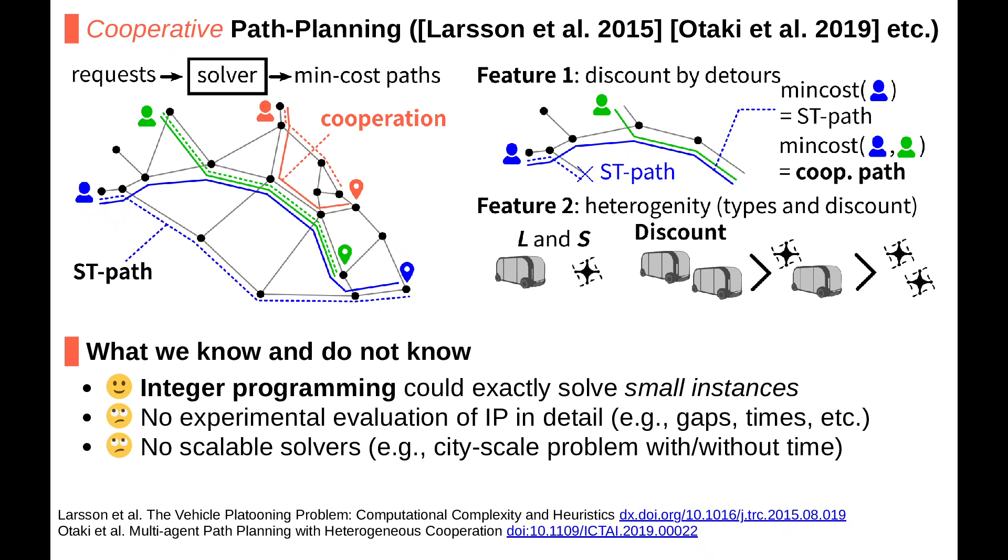For this problem class we know that small instances can be optimally solved by modern IP solvers. However, the behavior of using IP solvers was not analyzed in detail. In addition, we have no scalable solvers, so we are now studying this problem class and this talk presents some experimental results.